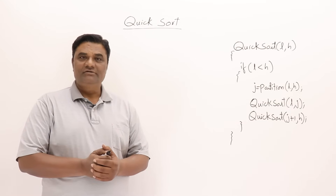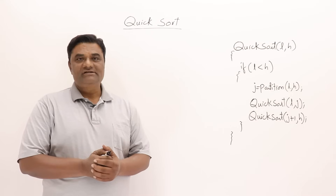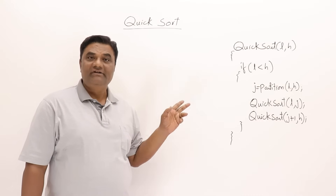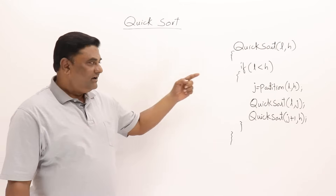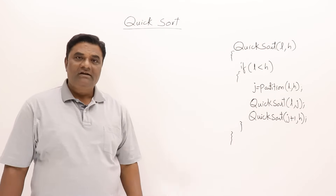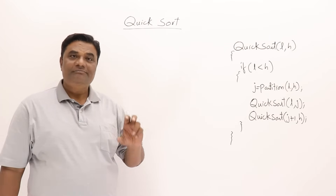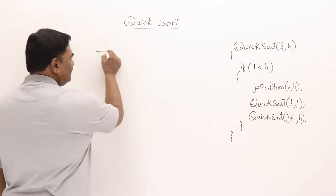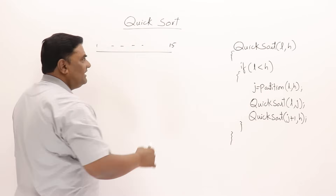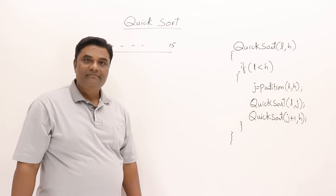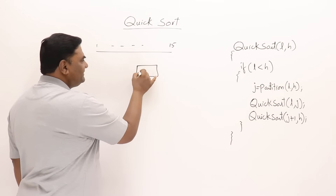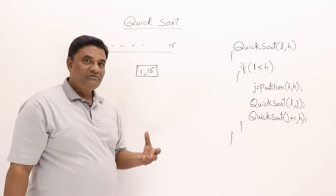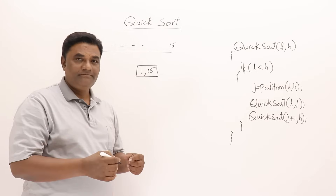Let us look at the analysis of QuickSort and find out its time complexity. An important thing is that it is recursive and follows a divide-and-conquer strategy, using a partitioning procedure. The partitioning algorithm finds the position of the pivot and divides the list. Suppose I have a list of 15 elements and I call QuickSort passing the first index as 1 and the last index as 15, with partitioning at the middle.